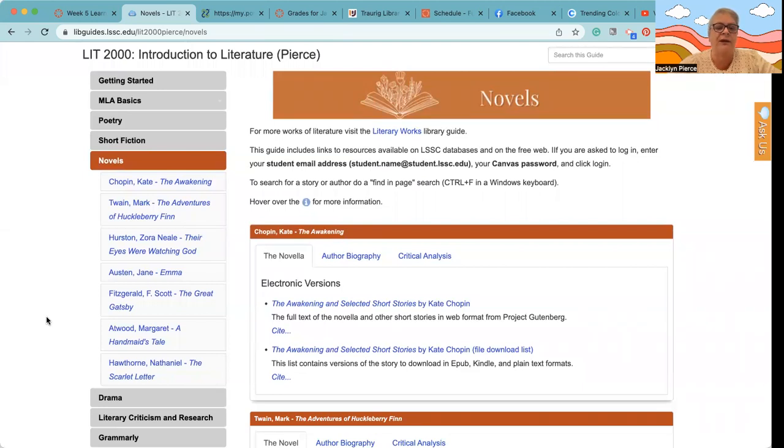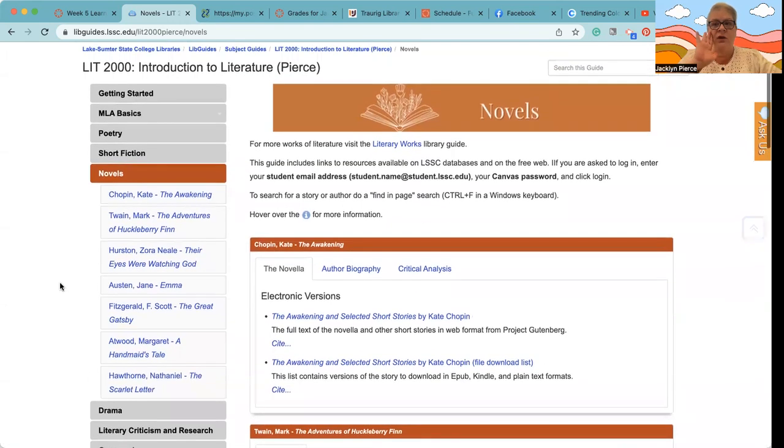I know that, especially if I'm going to write about it, I'd like to have the paper—I like to have the book on paper and not just electronically. These are the novels that you can choose from: Kate Chopin's The Awakening, Mark Twain's The Adventures of Huckleberry Finn, Zora Neale Hurston's Their Eyes Were Watching God, Jane Austen's Emma, F. Scott Fitzgerald's The Great Gatsby, Margaret Atwood's A Handmaid's Tale, and Nathaniel Hawthorne's The Scarlet Letter. Another good option if you want a print copy but you don't want to purchase anything is the local library or the school library.